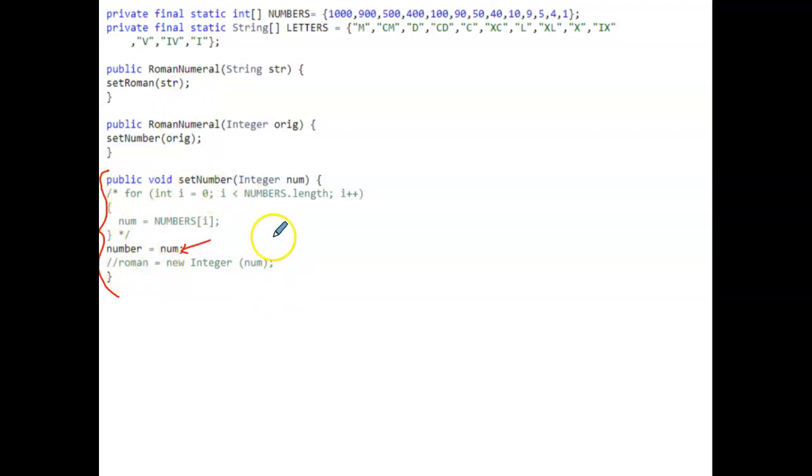I'm assuming that what you commented out is your original algorithm. But the next thing that your method needs to do is convert that integer capital I Integer number that was passed by parameter into a Roman numeral.